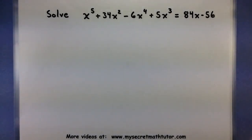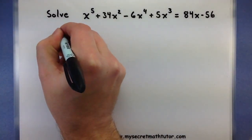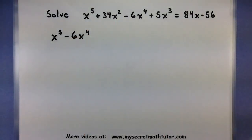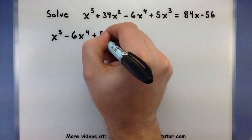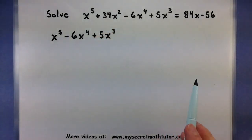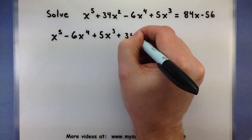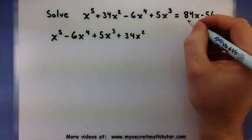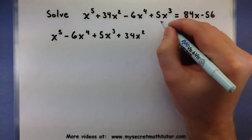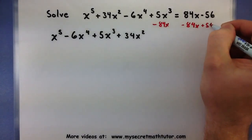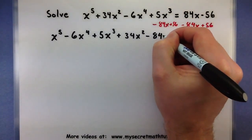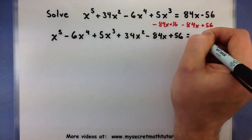The very first step is to get zero on one side, and we'll also make sure that our powers are in descending order. So we'll start off with x to the fifth, since that is our highest power, then minus 6x to the fourth, plus 5x cubed, plus 34x squared. My other two terms are on the other side of the equal sign, so we get them on the same side: minus 84x plus 56, now moving to the other side, giving us minus 84x plus 56 all equal to zero.